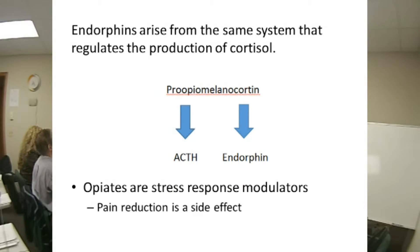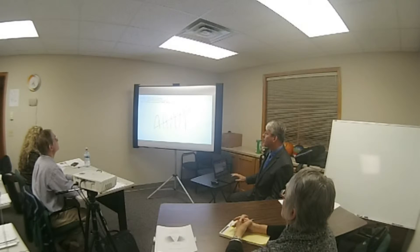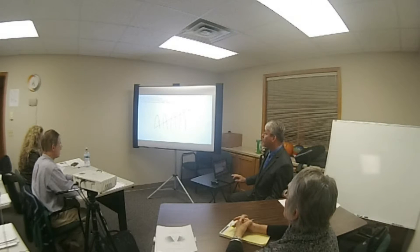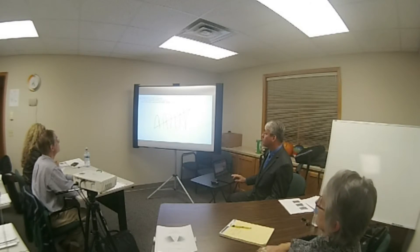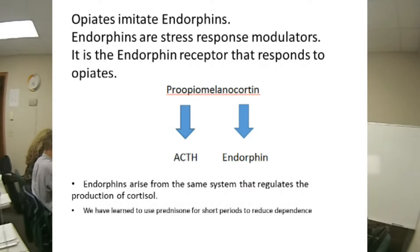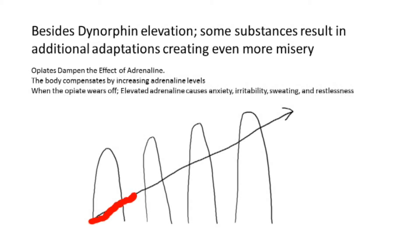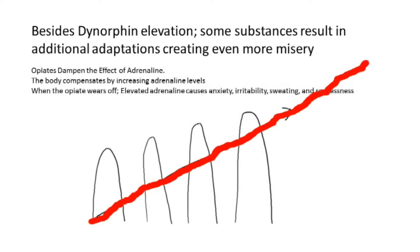Opiates are part of our stress response modulation pathway. One of the ways they do that is by dampening the effect of adrenaline, which is why it makes us sleepy. Opiates dampen the effect of adrenaline; the body compensates by elevating adrenaline levels, and the increased adrenaline results in anxiety, irritability, sweating, and restlessness.